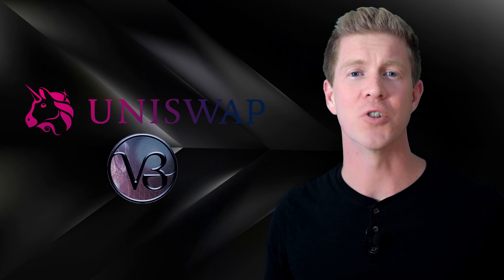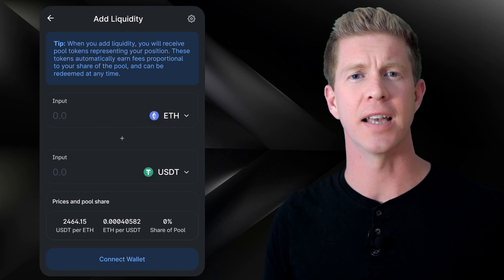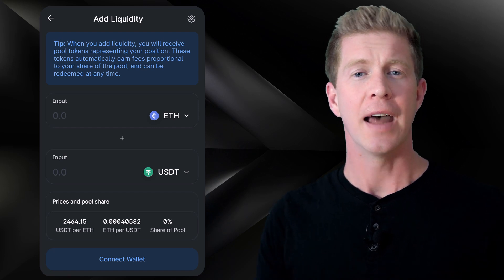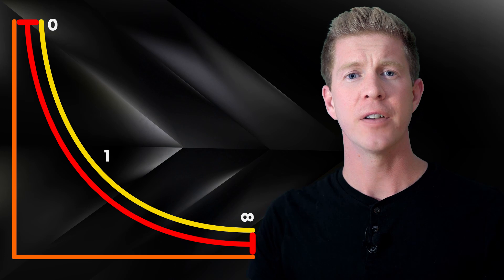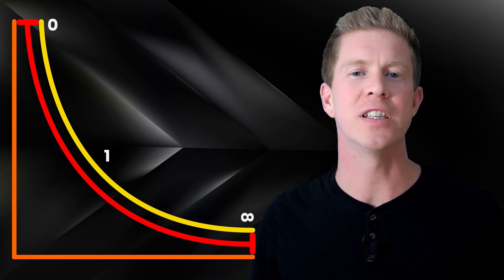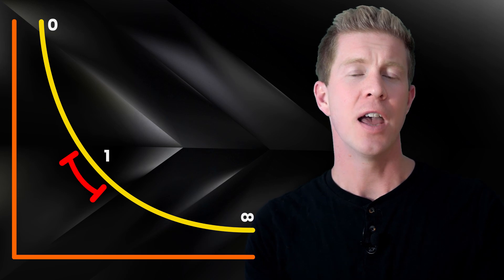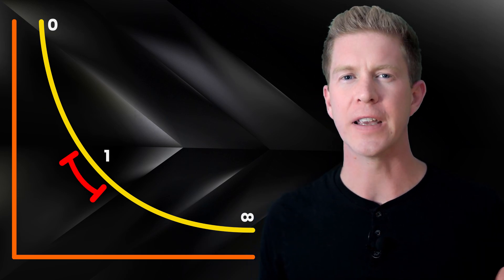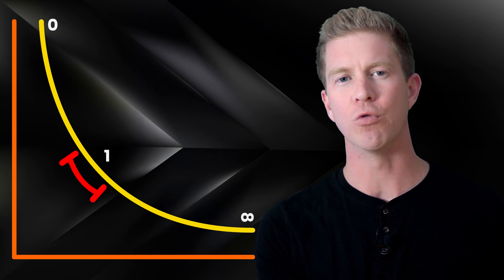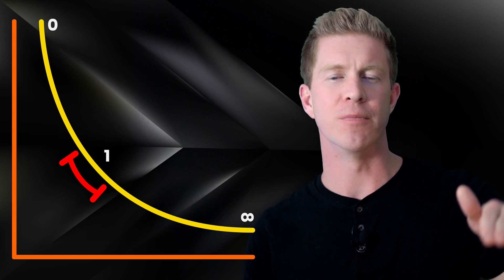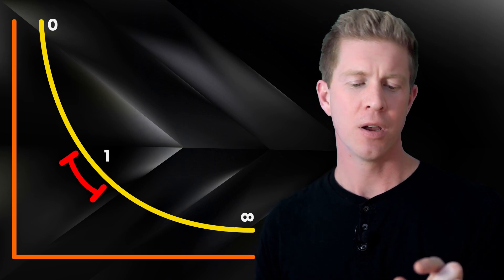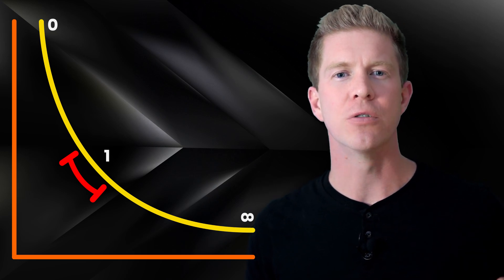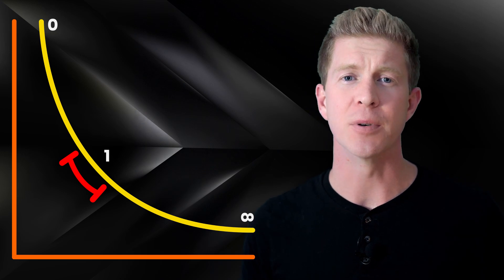To understand range orders, first we need to understand concentrated liquidity. In Uniswap version 2, a liquidity provider would provide a pair of assets — say Ethereum and US Dollar Tether — and the price would be set along a curve between zero and infinity, trading anywhere along that curve depending on pool balances. With Uniswap version 3, a liquidity provider can specify a fixed range in which they want to provide liquidity. This is useful for stablecoins, which might trade only within a very small range like 0.99 to 1.01, making liquidity more effective and earning more fees.